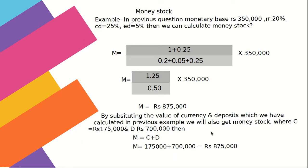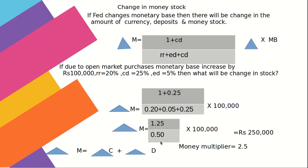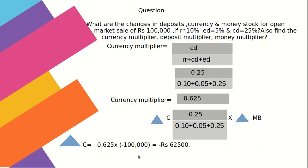Change in money stock: when the Fed changes the monetary base, there is a change in currency, deposits, and money stock. The formula is ΔM = [(1 + CD) / (RR + ED + CD)] × ΔMB. For an open market purchase, substituting values gives ΔM = 2,50,000. The money multiplier = (1 + CD) / (RR + ED + CD) = 2.5, and ΔM = ΔC + ΔD.